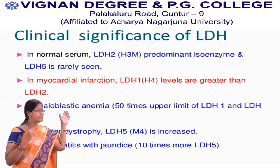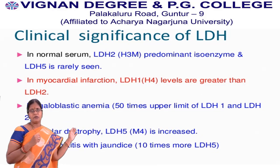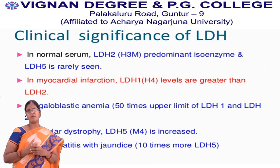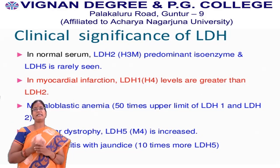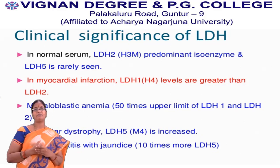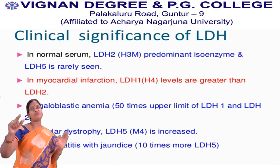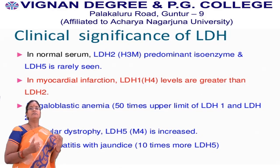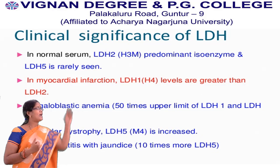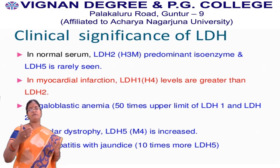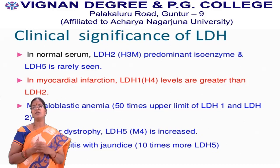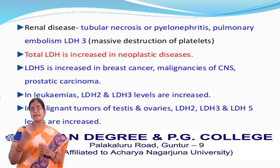In megaloblastic anemia, in a healthy person LDH2 levels will be at higher values, but in myocardial infarction conditions, LDH1 and LDH2 levels are elevated 50 times. In case of muscular problems, LDH2 levels will be increased. By these values, we can determine which type of disease the person is suffering from. Lactate dehydrogenase isoenzymes are said to be a serum marker enzyme.